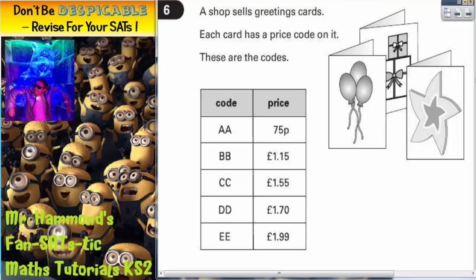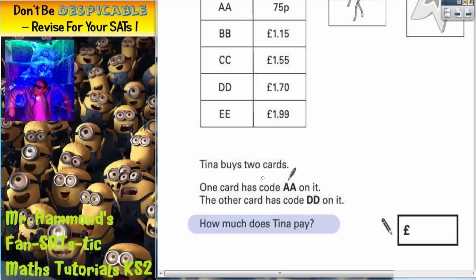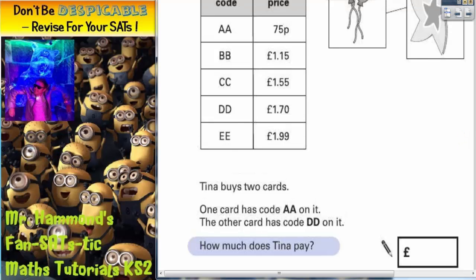So we've got code AA is 75p, BB is £1.15, CC is £1.55, DD is £1.70, and EE is £1.99. What have we got to do? It says Tina buys two cards. One has code AA on it and the other has code DD on it. How much does she pay?